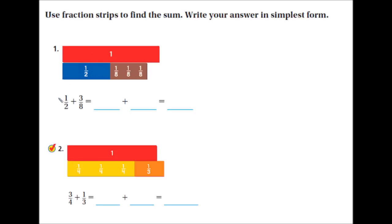We have one-half plus three-eighths. We demonstrated that by putting a one-whole fraction strip here on top, and then we put one-half and then the three-eighths underneath it. Now we need to figure out what size blocks we can put underneath this that will all be the same size and that will be exactly this length in total.